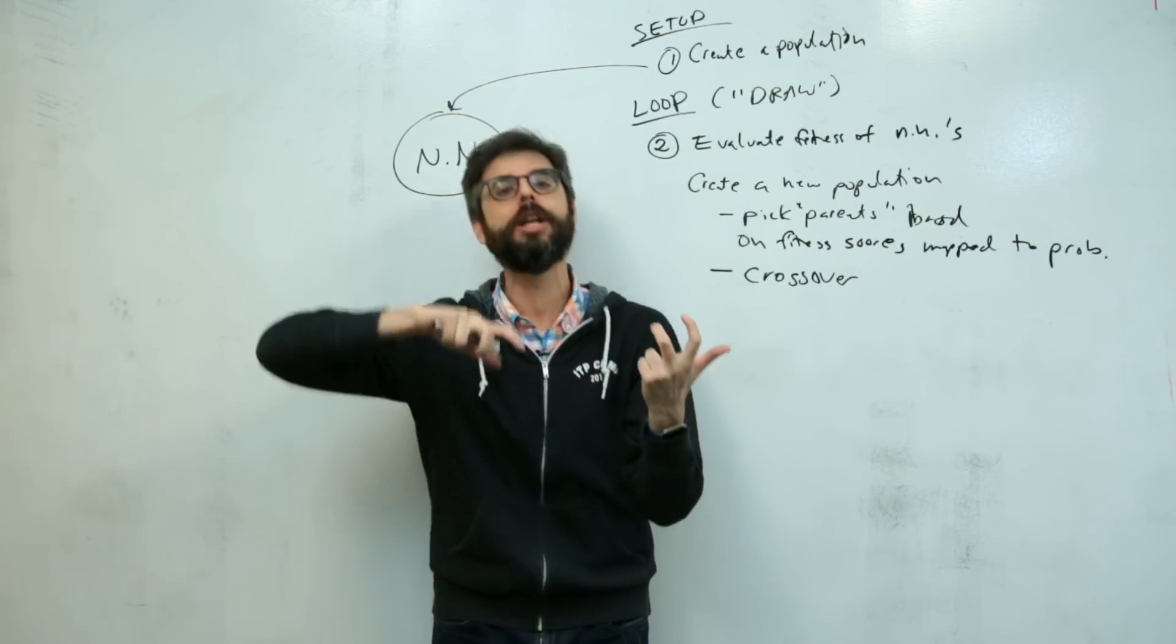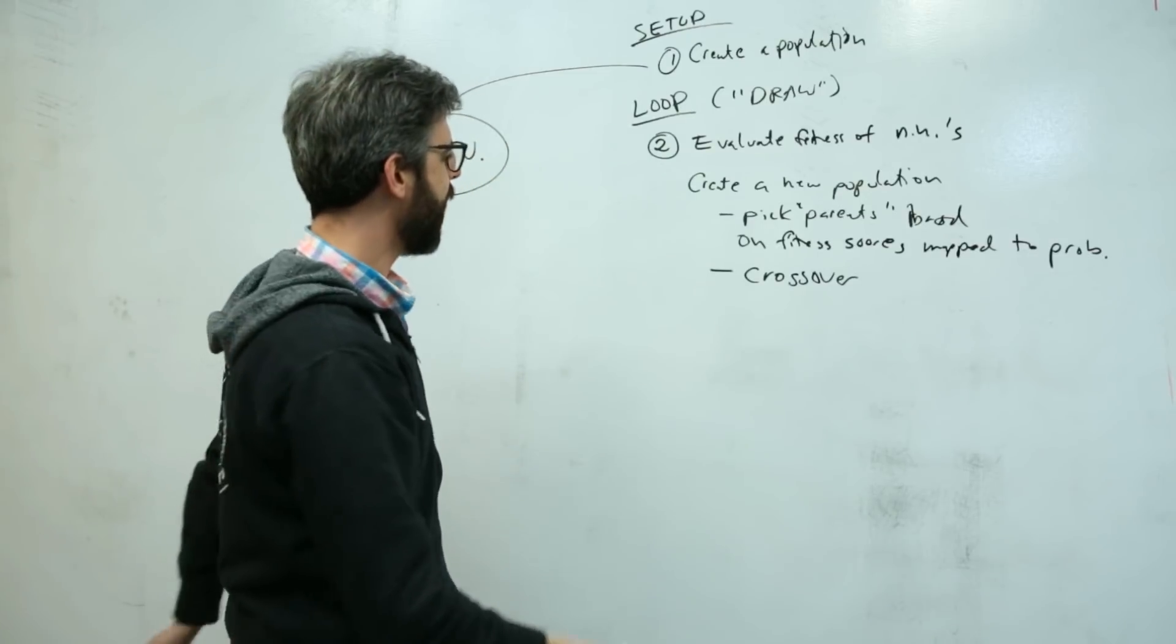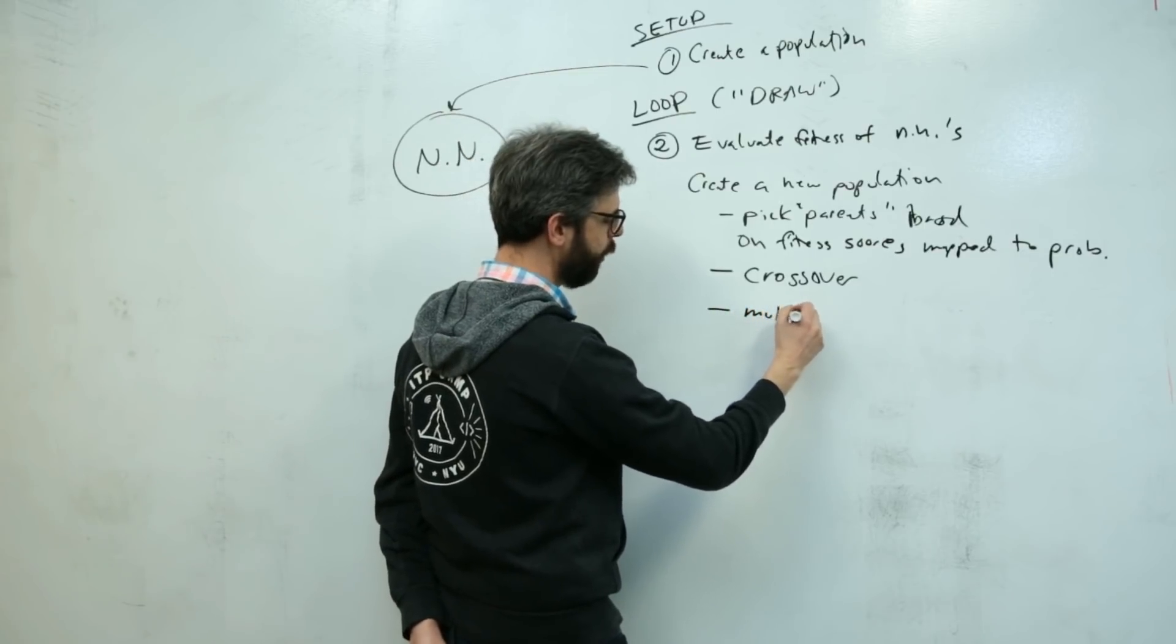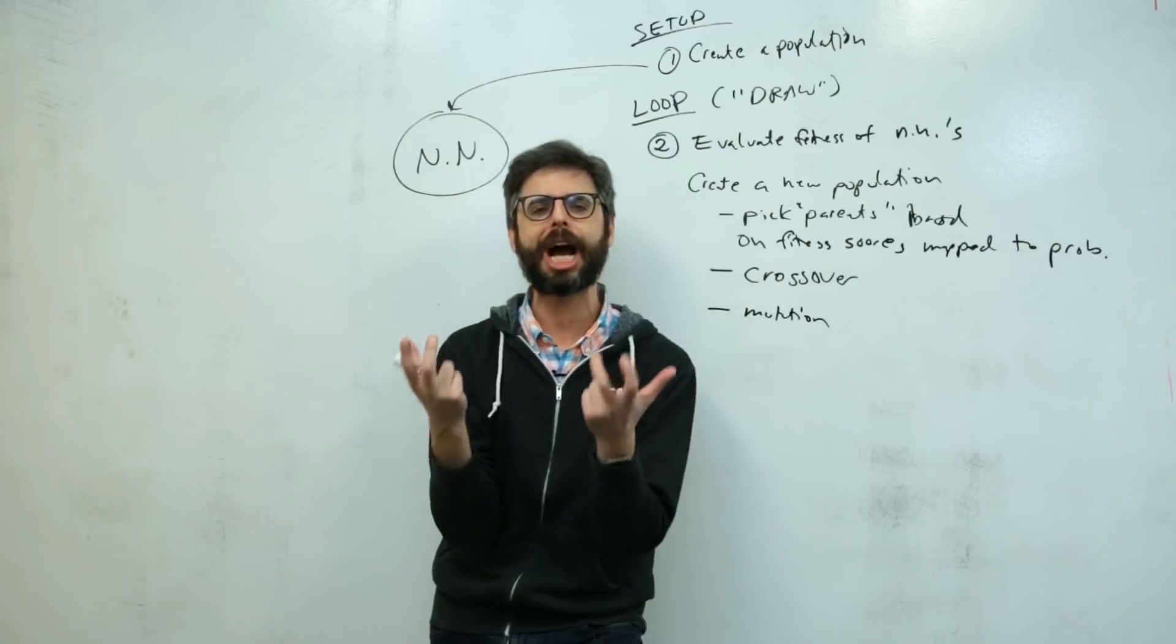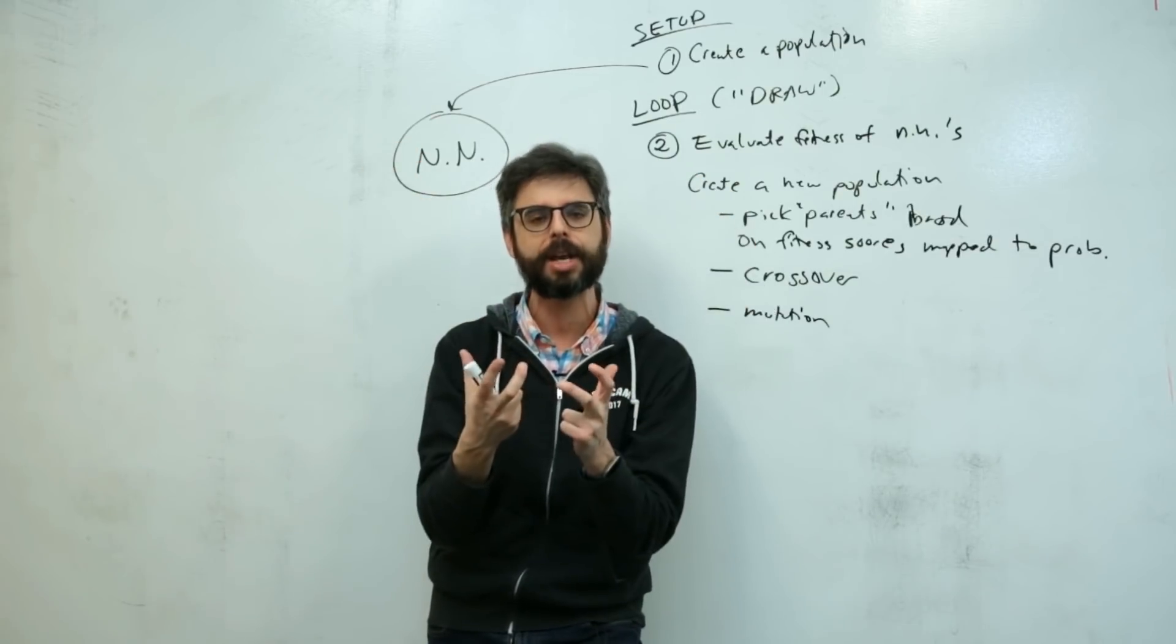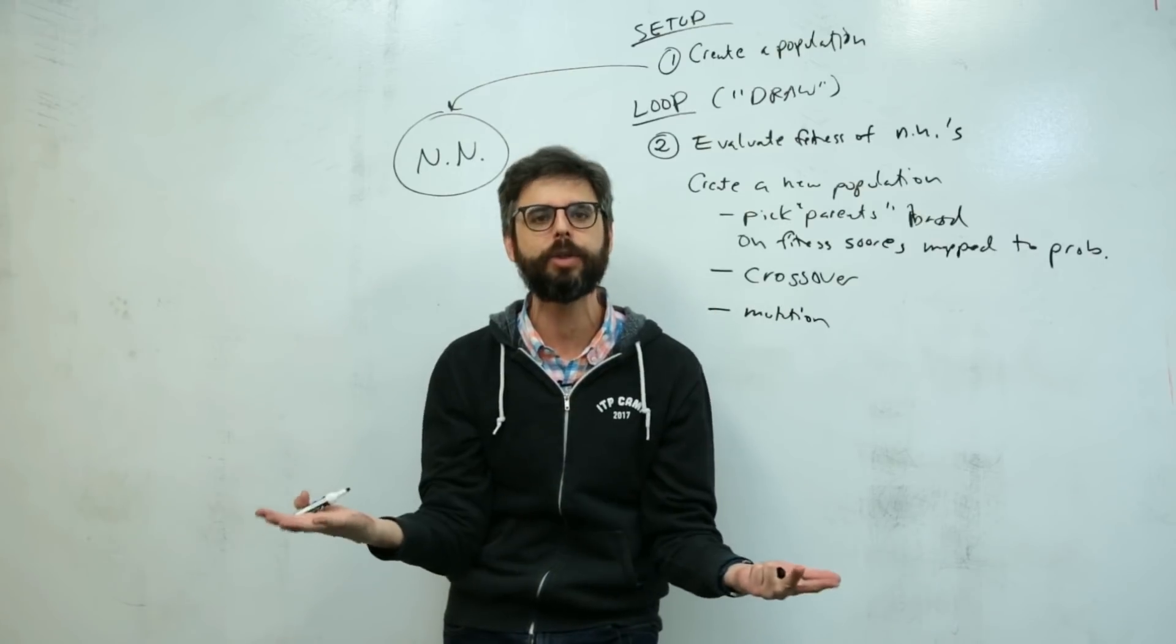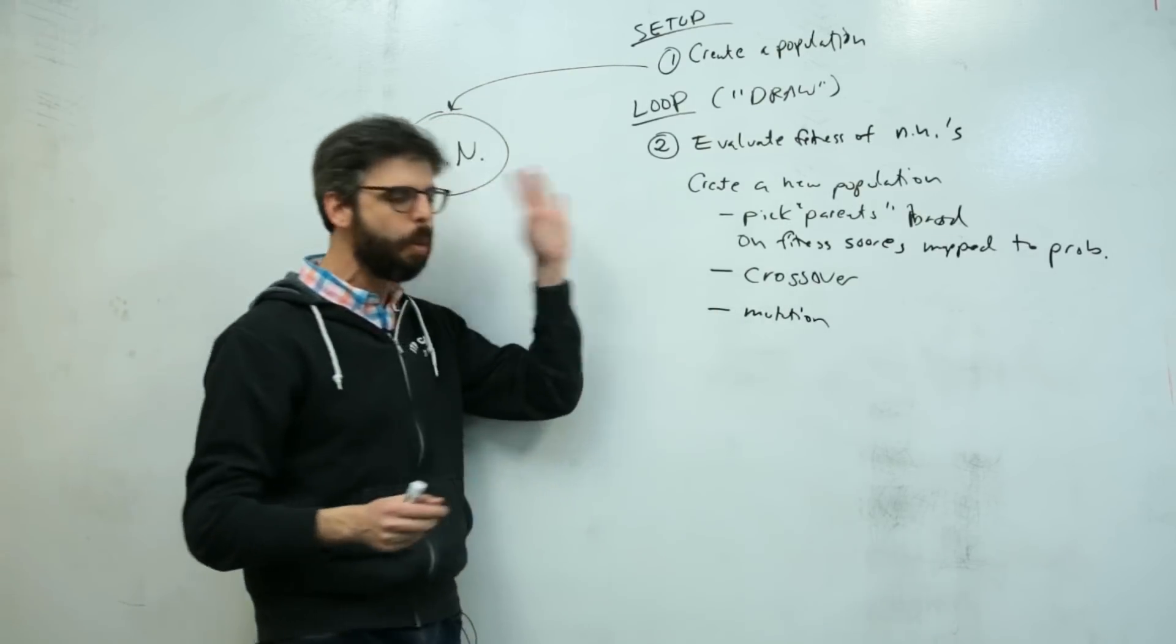Then I can apply mutation, which is the step of saying, let me look at this child DNA made from two parents and randomly just change some of it up, as if it's spontaneously mutating to continue to have variation in the system.